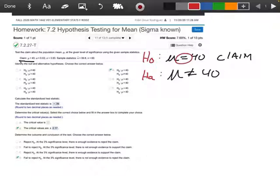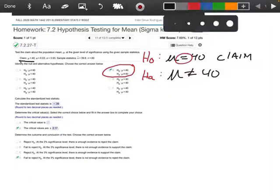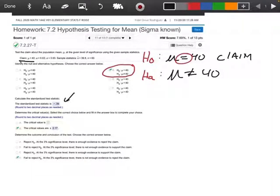it says identify the null and alternative hypothesis. And if you notice, that's exactly what I did right here. So H0 is that mu is equal to 40, Ha is that it's not equal to 40. Okay, then the second part here says, let's calculate the standardized test statistic.